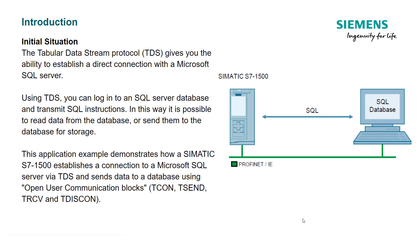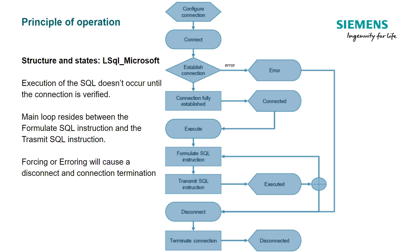These blocks are available inside of TIA Portal. The principal operation of the LSQL Microsoft function block is that execution of the SQL doesn't occur until the connection is verified. Here in the beginning of the loop you will see this taken care of, either checking for errors or becoming fully established. Once the block is fully established, the main loop resides between the formulate SQL instruction and the transmit SQL instruction. Here is where you will find the main cycle. Forcing or erroring will cause a disconnect and connection termination.